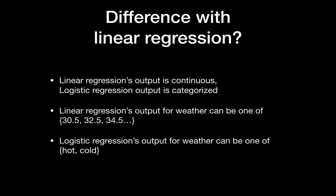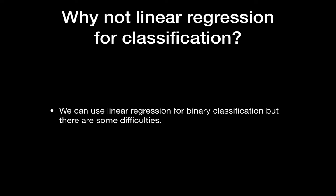Let's take a look at the difference between linear regression and logistic regression. Linear regression output is continuous, while the logistic regression output is categorized. For example with temperature, the output of linear regression is something like 30.5 or 32.5 — a continuous value — but logistic regression for weather data gives categorized output like hot or cold.